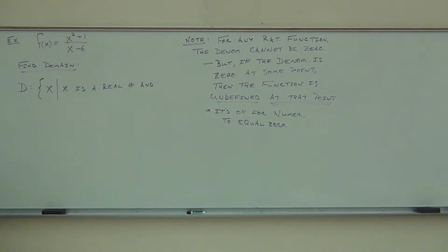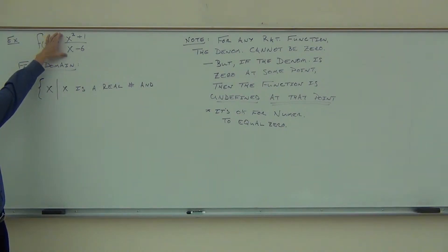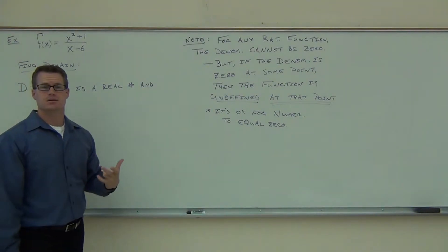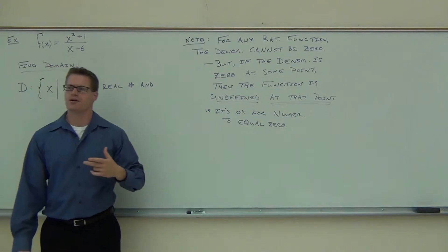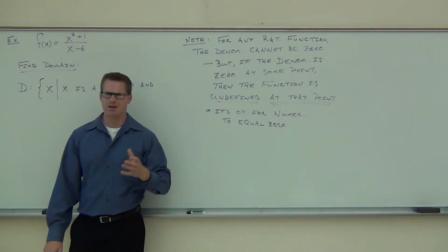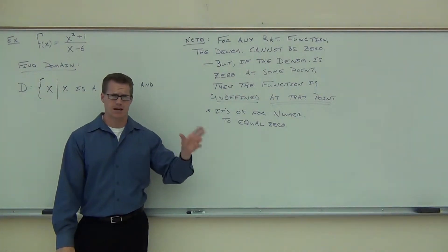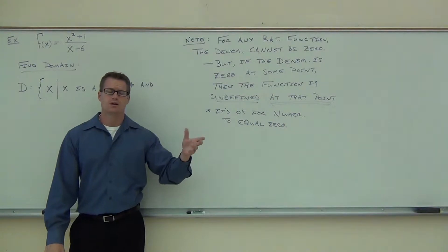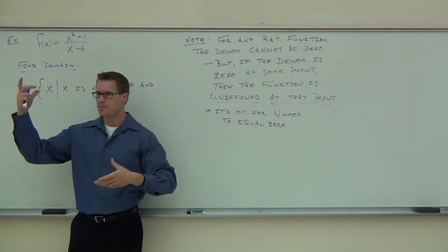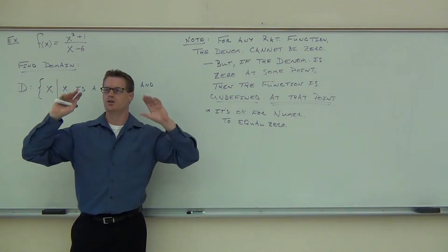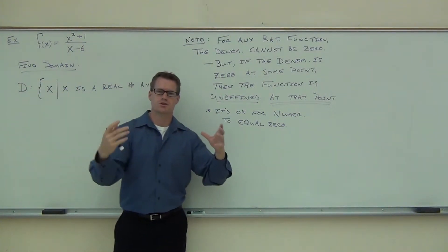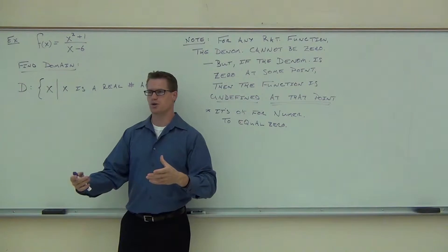I want you to look back at this problem. We're going to think: are there any numbers that I cannot plug in to this problem because it would create the one error I cannot have in fractions? And what's the one error I cannot have in fractions? Zero. I can't have zero in the denominator. Does the top matter? No — numerators are fine. You can have zero there. I'm not even going to look at the numerator when I'm looking for a domain.